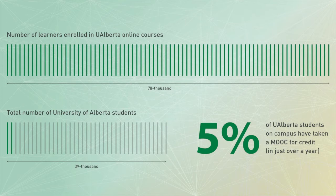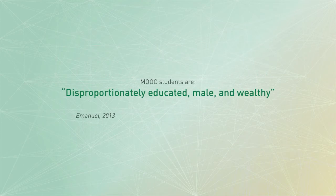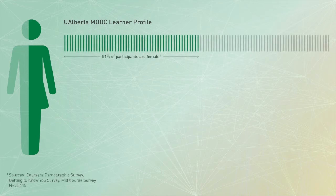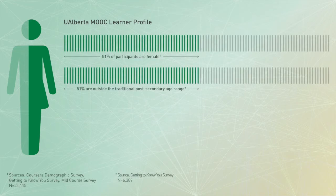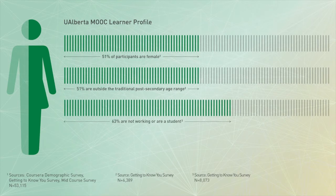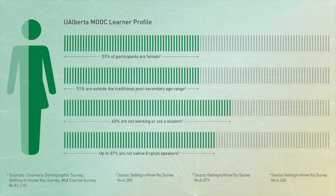The diversity of our MOOC learners is astonishing. A particular academic quote that has persisted in popular media coverage of MOOCs claims that MOOC students are disproportionately educated, male, and wealthy. But at the University of Alberta, a very different learner profile emerges: 51% of participants are female, 51% are outside the traditional post-secondary age range of 22 to 34, 63% are not working or are a student, and up to 57% are not native English speakers.